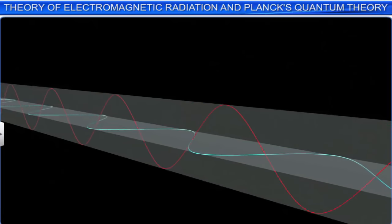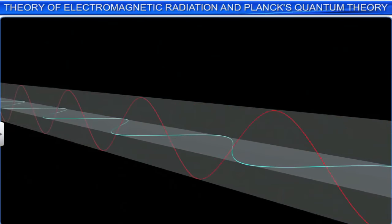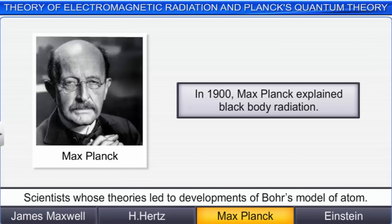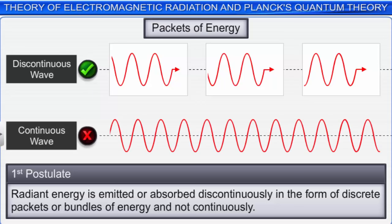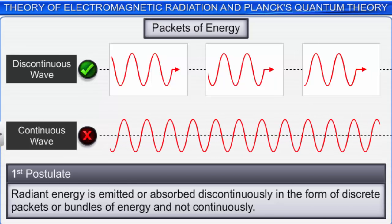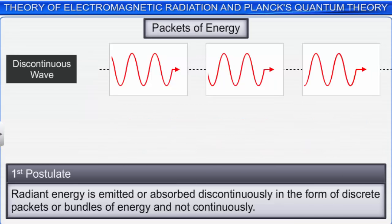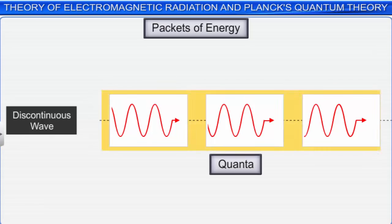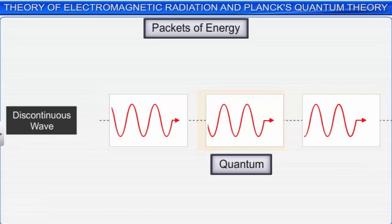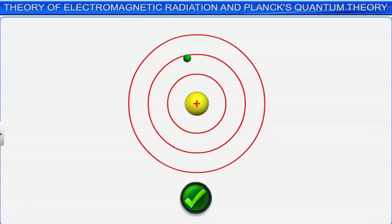These observations could not be explained by the electromagnetic wave theory of light. To account for these experimental observations, Max Planck in 1900 proposed that radiant energy is emitted or absorbed discontinuously in the form of discrete packets or bundles of energy called quanta, and not continuously. This is the first postulate of Planck's theory. Planck called these discrete quantities quanta. A quantum is the smallest quantity of energy absorbed or emitted in the form of electromagnetic radiation. This means that light radiations absorbed or emitted by atoms or molecules comprise a stream of quanta, not continuous waves.